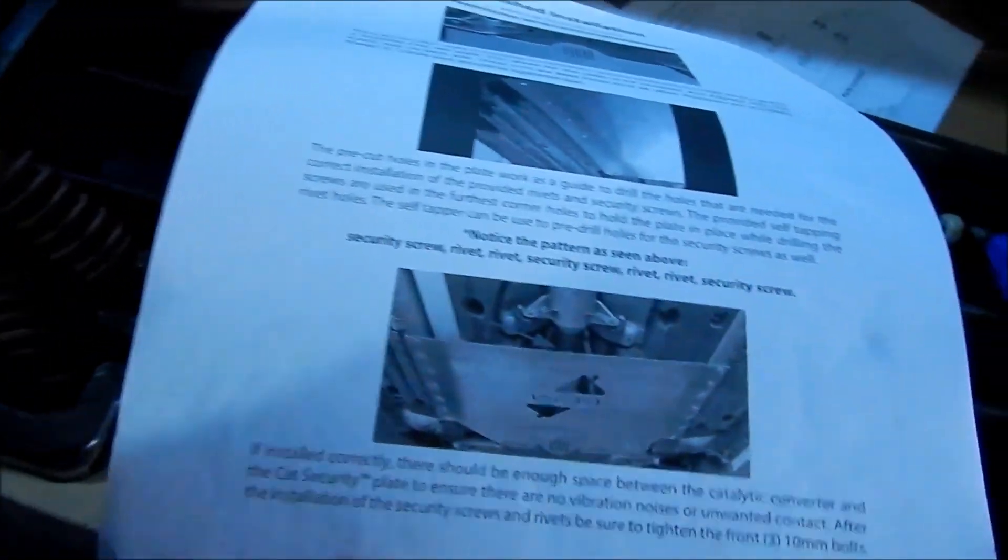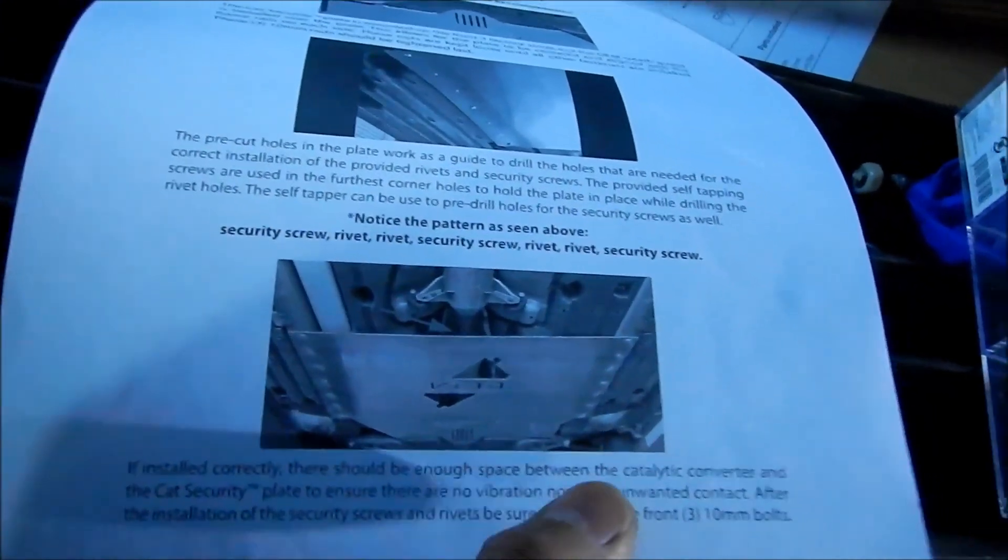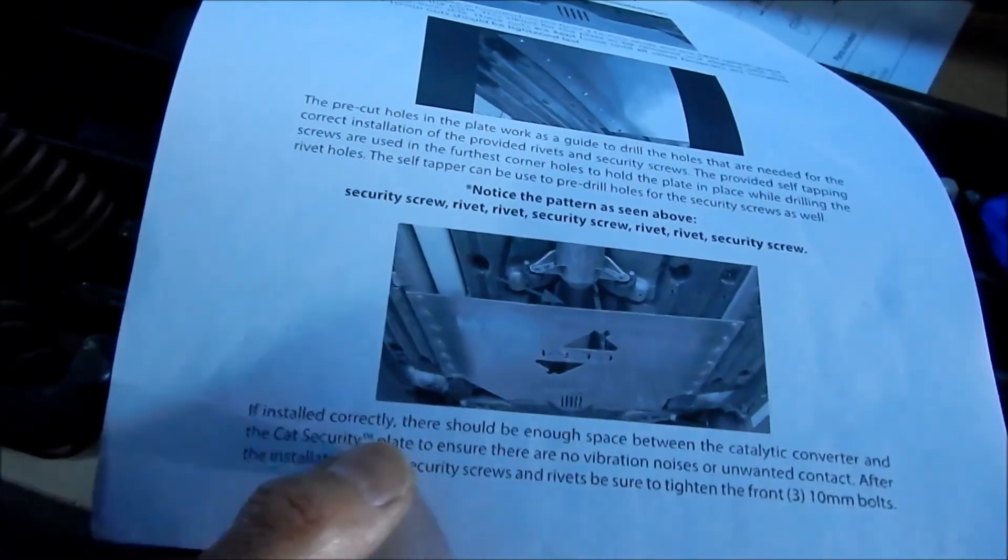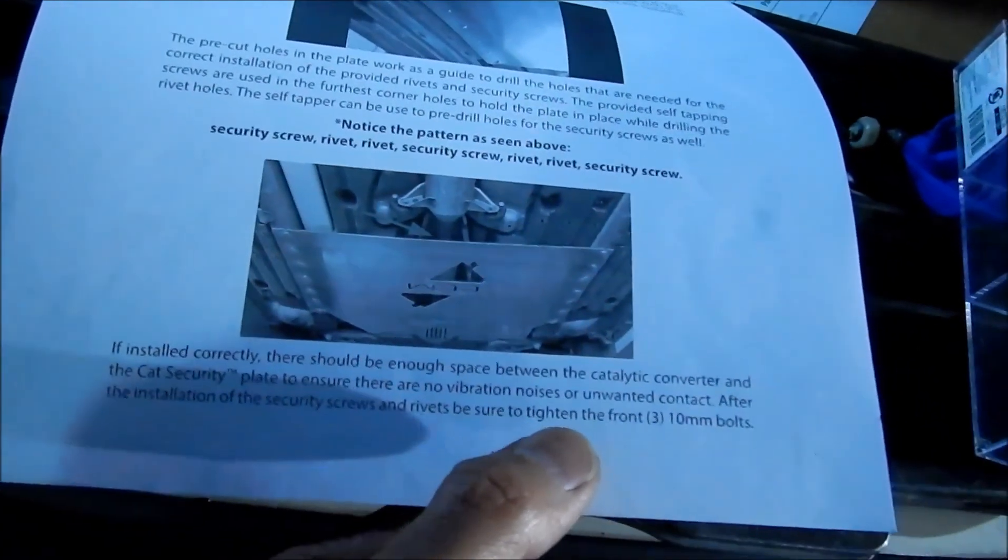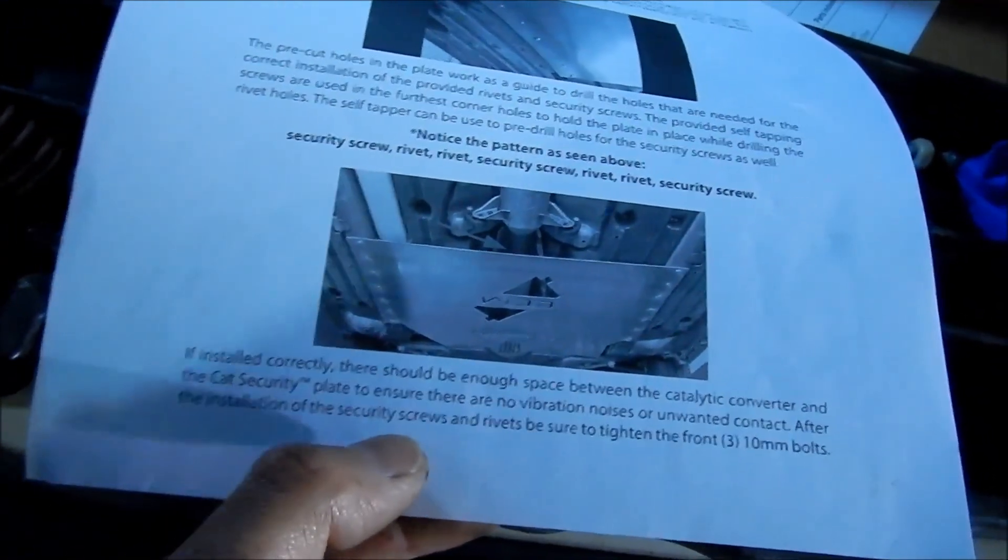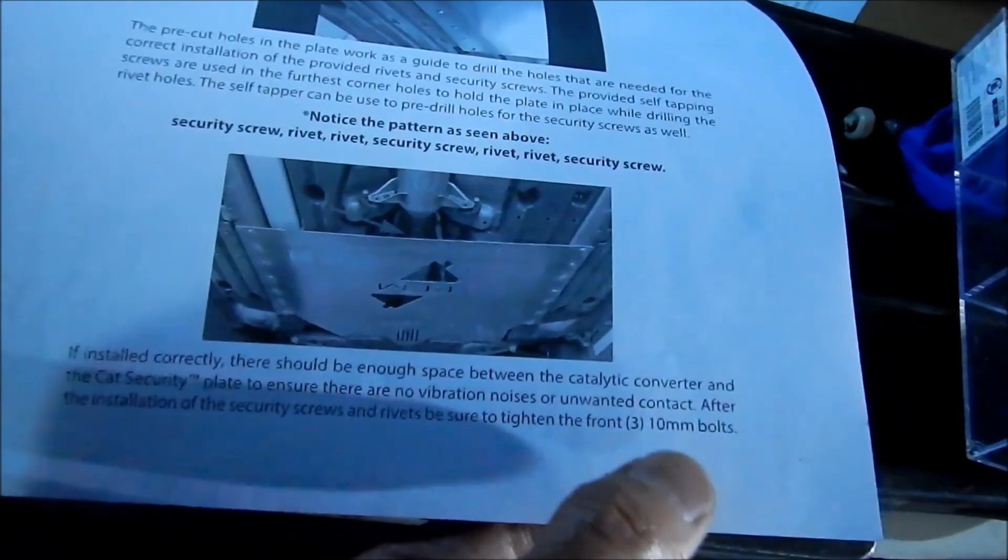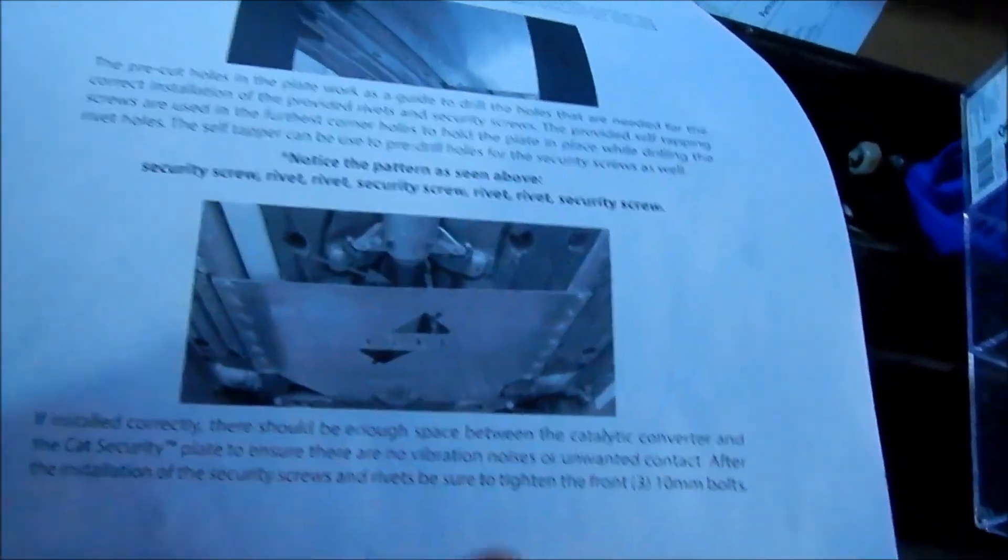There it is. So we're all done. I didn't even bother to look at the instructions again. But it said that you just installed the rivets and everything. So if installed correctly, there should be enough space between the catalytic converter and the CAT security plate to ensure there is no vibration, noises, or unwanted contact. After the installation of the security screws and rivets, be sure to tighten the front three 10mm bolts. We just did that. So we're done. So let's go take a look at it more closely to make sure there's no clearance issues with anything. But I think we should be fine.